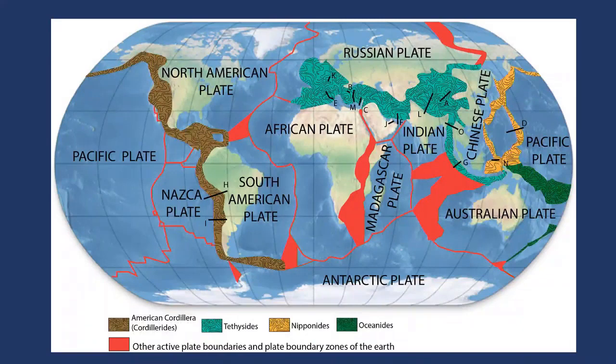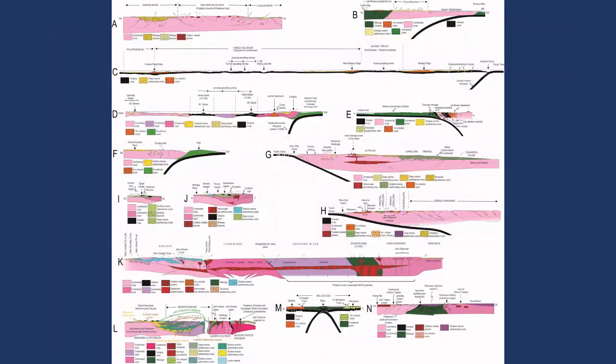These are the active mountain belts in the world today. As you can see, we have the Oceanides, Nipponides, the Alpides in Central Asia, and the Cordilleran chains. These are still actively shortening and deforming.